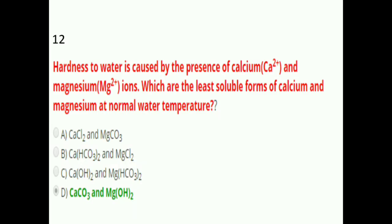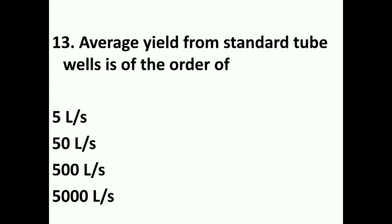Hardness in water is caused by the presence of calcium and magnesium ions. The least soluble forms at normal water temperature are carbonates — specifically calcium carbonate and magnesium hydroxide. The average yield for standard tube wells is of the order of 45 to 50 liters per second.